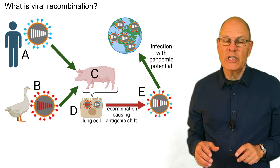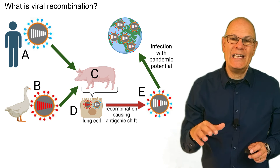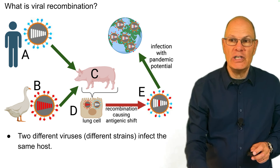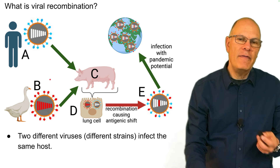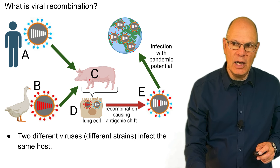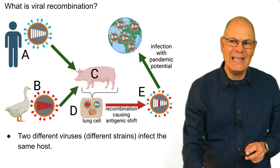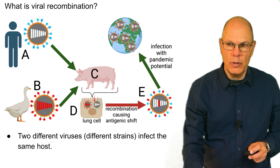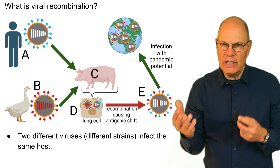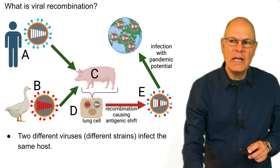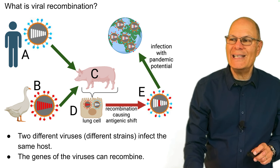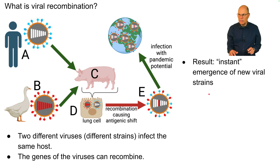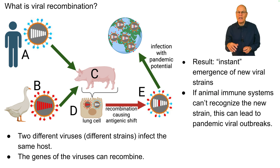What is viral recombination? This is a kind of horizontal gene transfer that occurs within viruses. In this case, two different viruses — different strains — infect the same host. Here you see them infecting a new host, and both viruses are inside a cell from the host. As they carry out their replication cycle, there's DNA from the host and DNA from the viruses, and the viral DNA can get mixed up. The genes of the viruses can recombine, resulting in the instant emergence of new viral strains. Sometimes if animal immune systems can't recognize the new strain, this can lead to pandemic viral outbreaks.